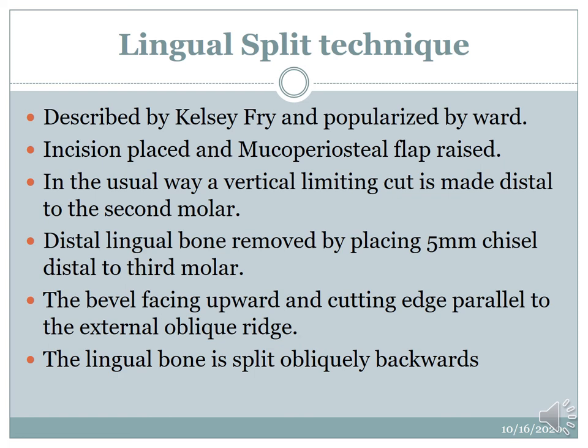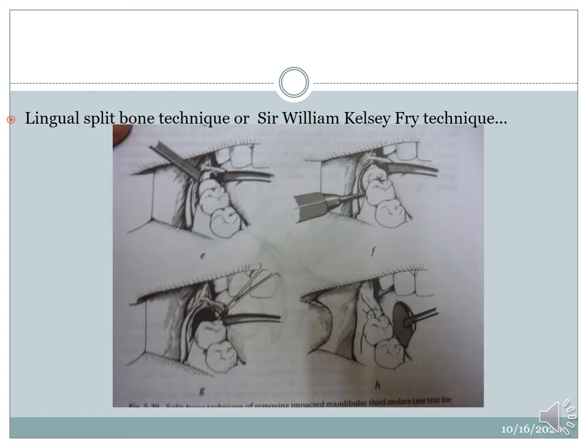The lingual split technique was more commonly in practice before the use of burr. It was described by William Kelsey Fry and popularized by Ward. An incision is placed and the mucoperiosteal flap is raised. A limiting vertical cut is made on the distal aspect of the second molar, distal lingual bone is removed by placing a 5 mm chisel distal to the second molar with the bevel facing upward and cutting edge parallel to the external oblique ridge. The lingual bone is split obliquely backward. This technique is now largely of historical interest as it is no longer good clinical practice.